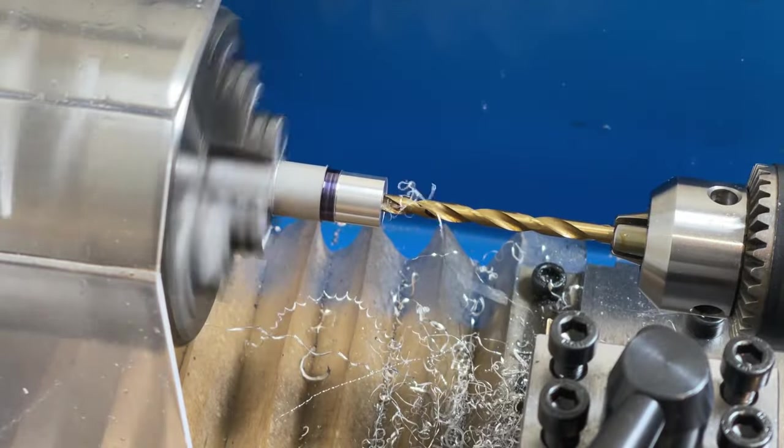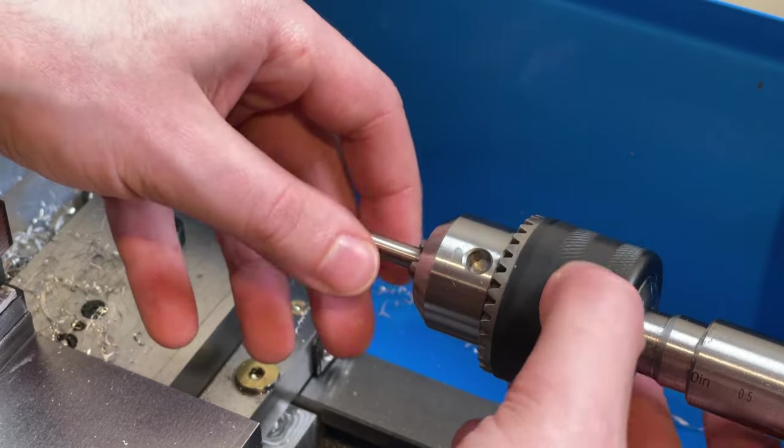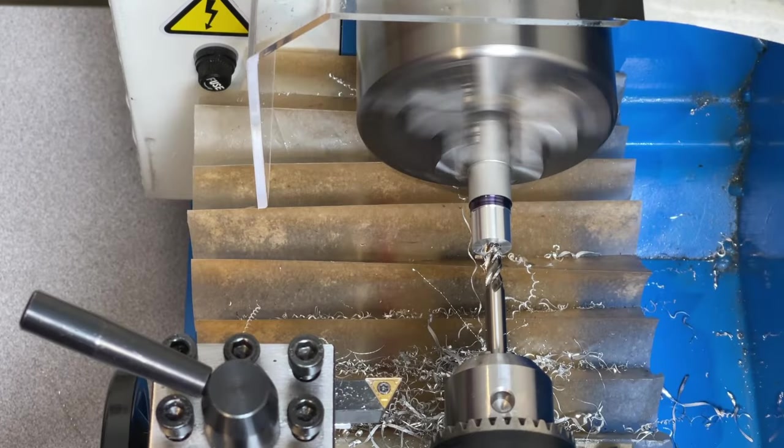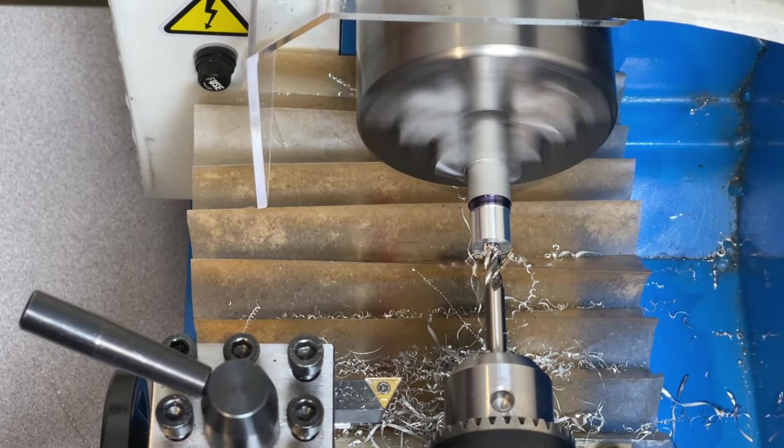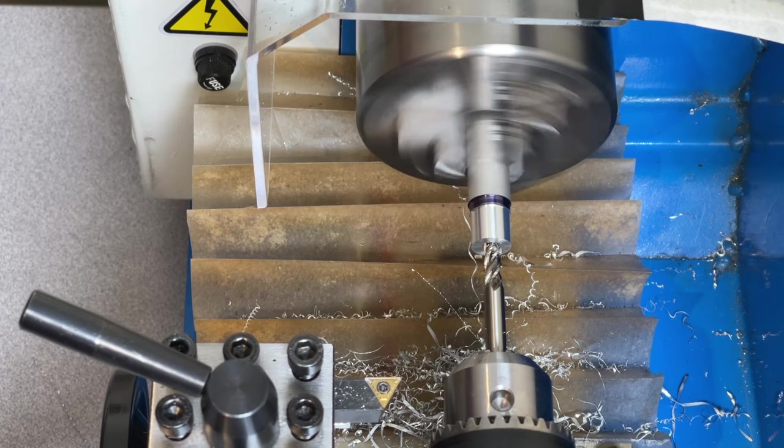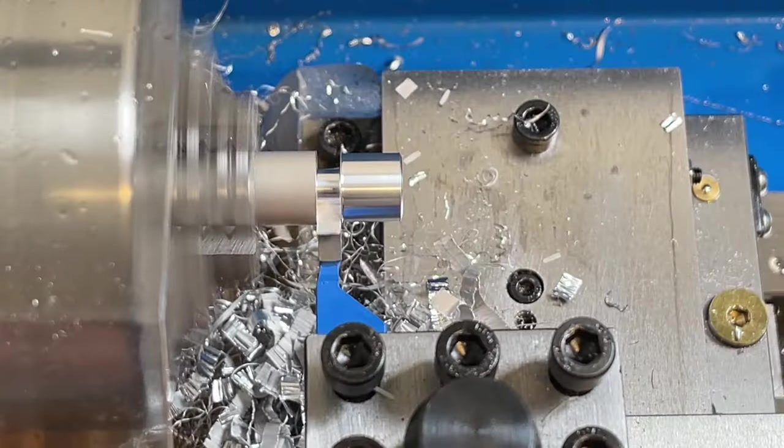Unfortunately, I still don't own any reamers, so I thought I would try using an end mill to see if it would give a better surface finish on the inside of the bushing. It turned out alright, but at some point down the line I definitely need to cave and get a package of those import reamers just to handle stuff like this.